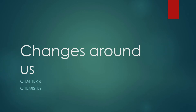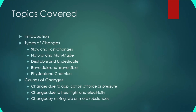Hello students, hope all of you are doing fine. This is the third part of the video of chapter 6 in chemistry, that is Changes Around Us. In earlier videos we have discussed about introduction and types of change, in which we discussed slow and fast changes, natural and manmade changes, desirable and undesirable changes, reversible and irreversible changes, and physical and chemical changes. Now in this part of the video we will explain about causes of changes.